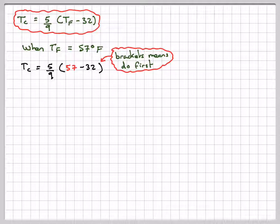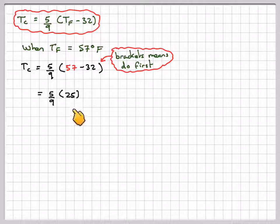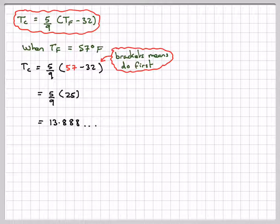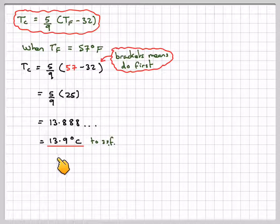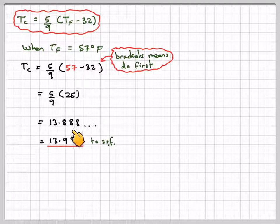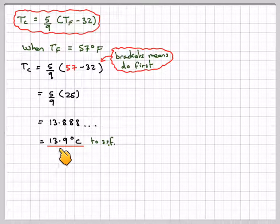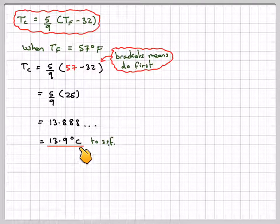Brackets in mathematics means you need to do that bit first. So 57 minus 32 is 25. We've got 5 ninths times 25. When there's no multiplication sign in maths, you assume that you need to multiply. We'll do 5 times 25 divided by 9, which gives 13.888 recurring. Then we round it off correctly to 3 significant figures, so we get 13.9 degrees C to 3 significant figures.